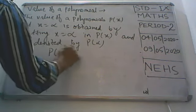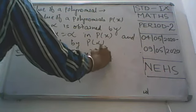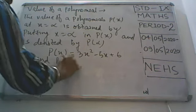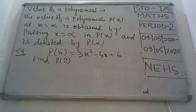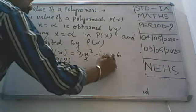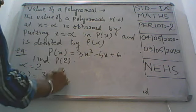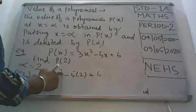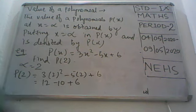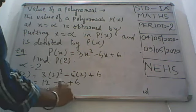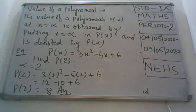Let's understand with an example. Suppose p(x) equals 3x² minus 5x plus 6, and they say find p(2). That means alpha equals 2, so wherever x appears we put 2. So p(2) equals 3 times 2² minus 5 times 2 plus 6, which equals 12 minus 10 plus 6. The value of p(2) is 8. This is how we find the value of a polynomial.